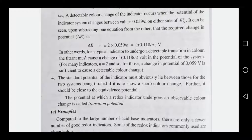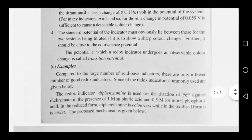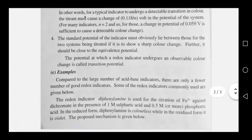Redox indicators show an observable color change within the transition potential range. The transition potential is the potential at which the indicator changes color, and this is the key property of a redox indicator.